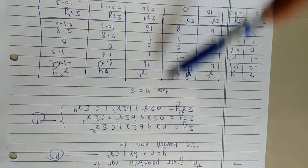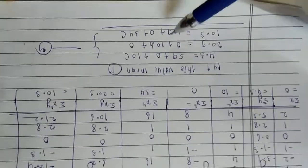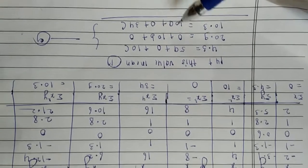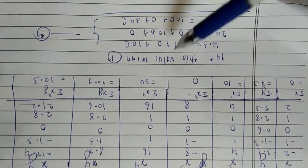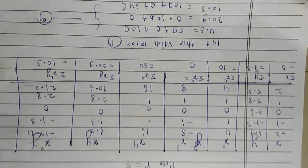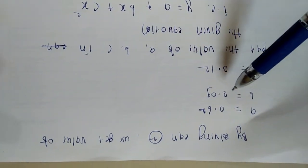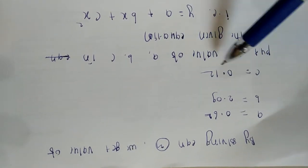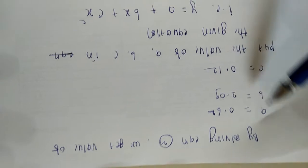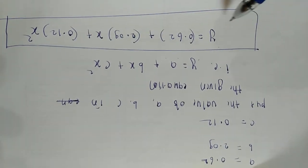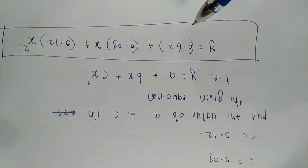After computing all summations, put these values into the normal equations to get equation number two. Solve this system of equations using the matrix method (Cramer's rule). After solving, the value of a = 0.62, b = 2.09, and c = 0.12. Put these values back into y = a + bx + cx² to get the required solution.